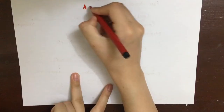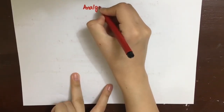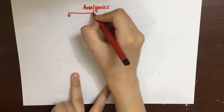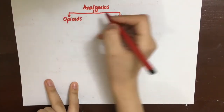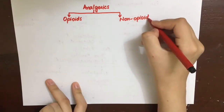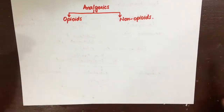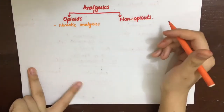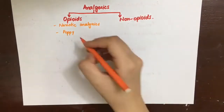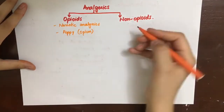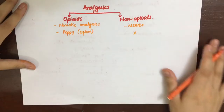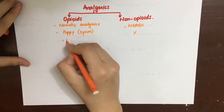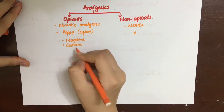Apart from the endogenous opioid system, we need analgesics from external sources for surgery or any sort of pain. Analgesics are drugs that relieve pain without significantly altering consciousness, and without affecting its cause. They can be opioids or non-opioids. Opioids are also known as narcotic analgesics, derived from the poppy plant opium, and chiefly include morphine, codeine, and heroin. Non-opioids are NSAIDs, discussed in another video.